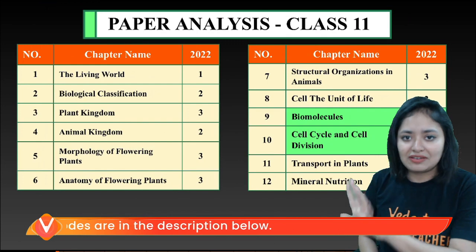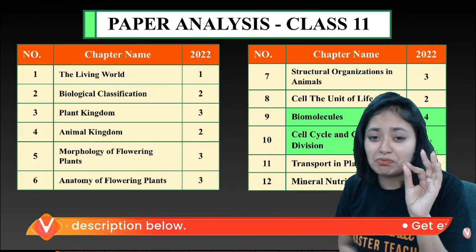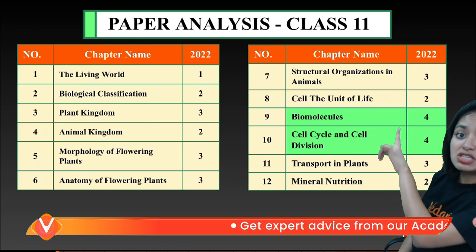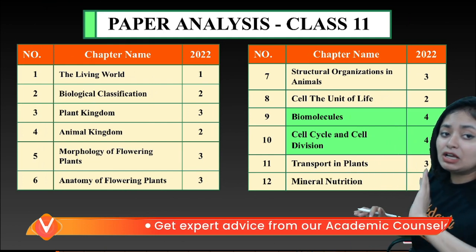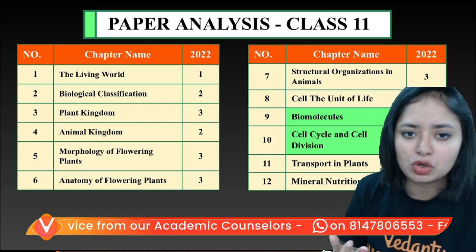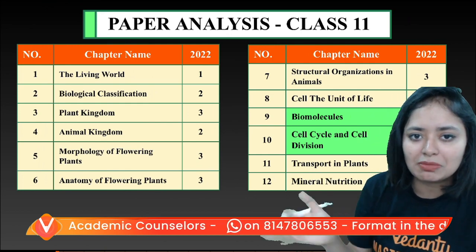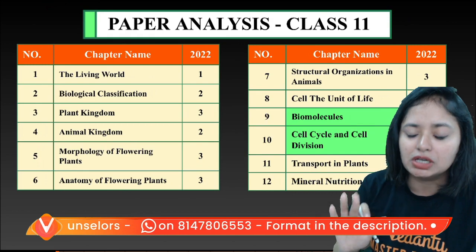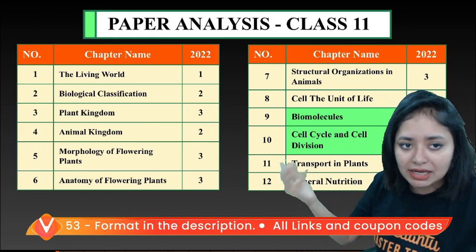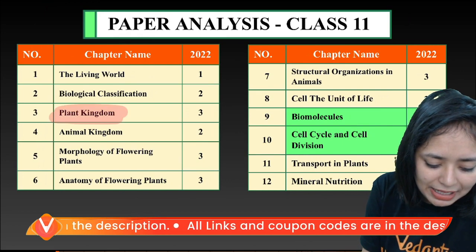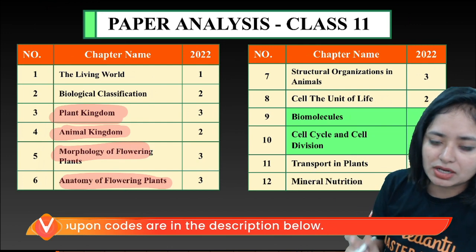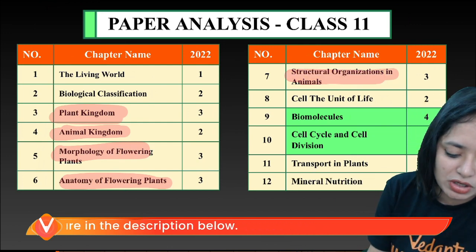In the 11th class, there are questions in biomolecules, cell cycle and cell division. There are four questions in biomolecules, cell cycle and cell division. Usually high weightage is needed. Human physiology is needed. Even the plant kingdom, the animal kingdom, the morphology of flowering plants, and the anatomy of flowering plants are very important.